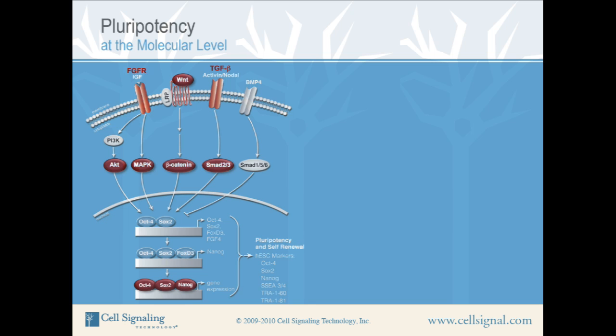These transcription factors activate gene expression of ESC-specific genes, regulate their own expression, and also serve as HESC markers. Other markers used to identify human ESCs are SSEA 3 and 4, TRA-160, and TRA-181.